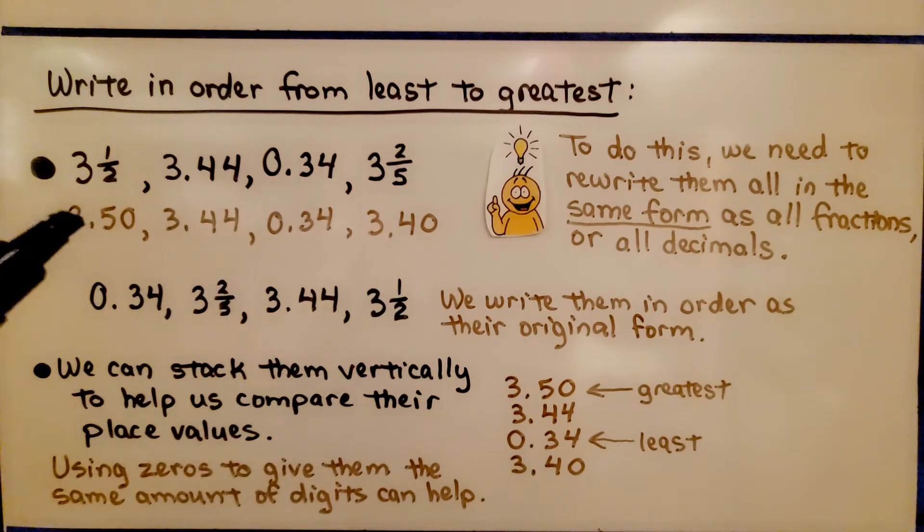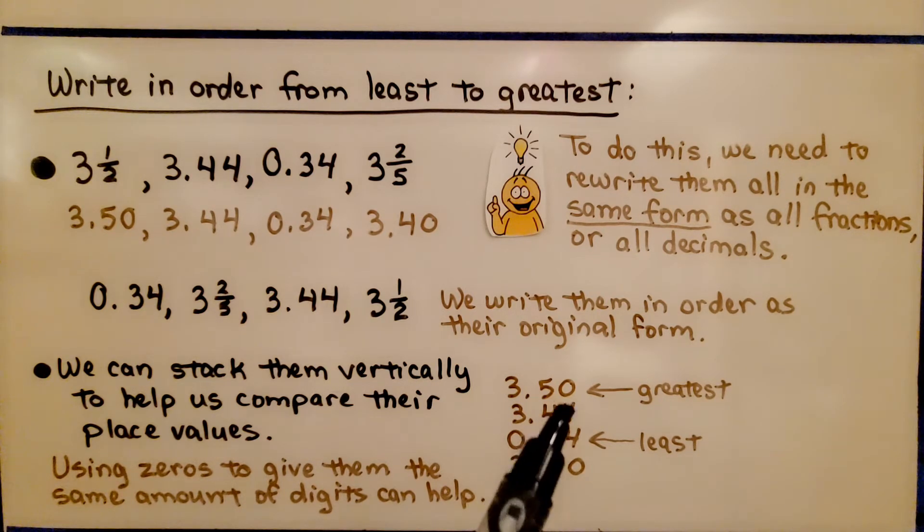Then it would be 3 and 50 hundredths. We can stack them vertically to help us compare their place values. Using zeros to give them the same amount of digits can help.